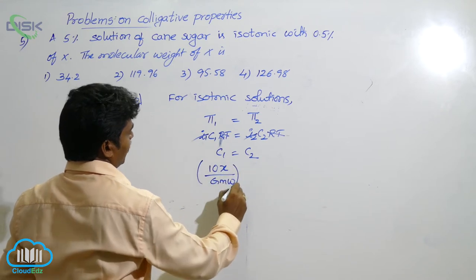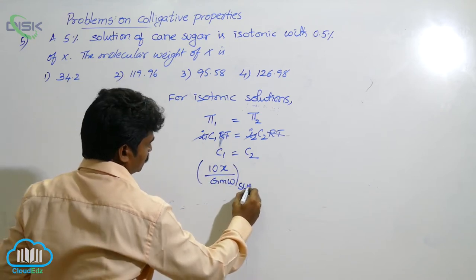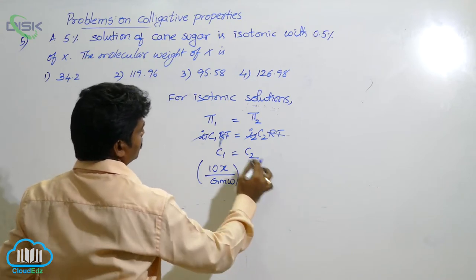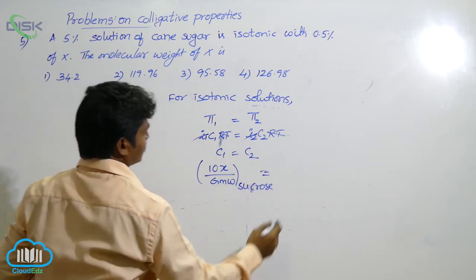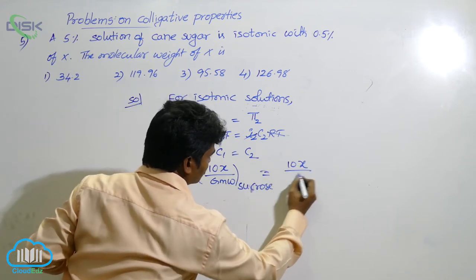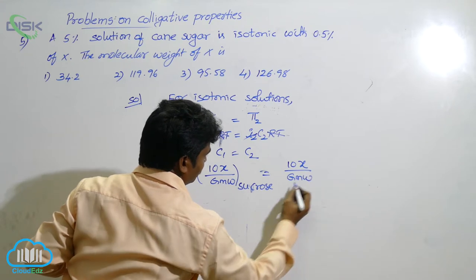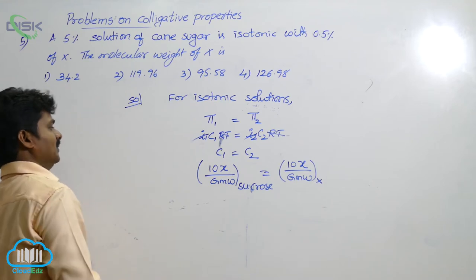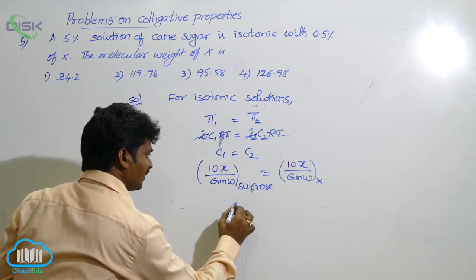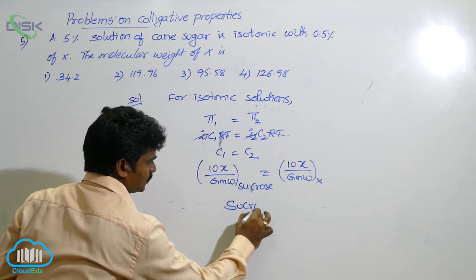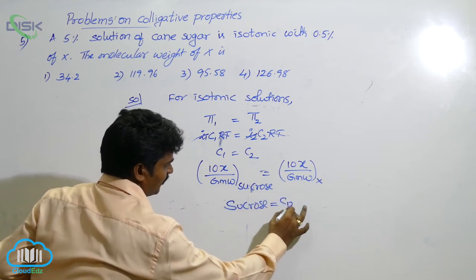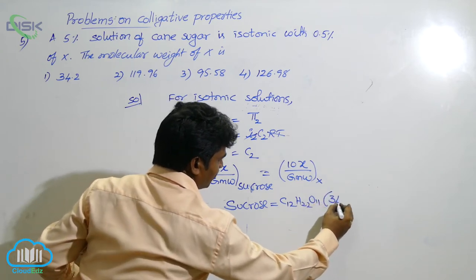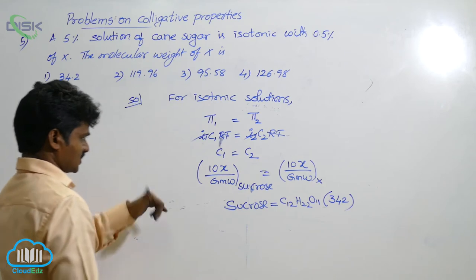10 into X into gram molecular weight of this sucrose. Sucrose means cane sugar. Second one, C2 means it is of second solute. How to write here also? 10 into X by gram molecular weight of that solute X. So, substitute the values. Sucrose formula C12 H22 O11. Its molecular weight is 342. So, substitute the values.